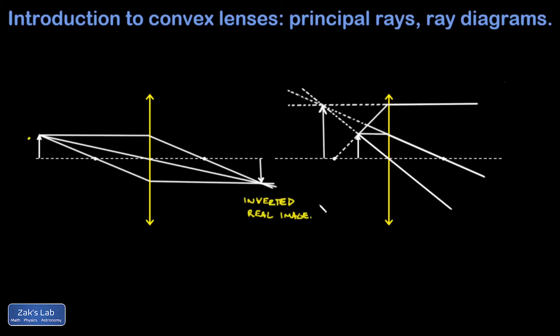So there are our two cases: when the object is outside the focus of the converging lens, we end up with an inverted real image on the opposite side. When the object is inside the focal point of the converging lens, we end up with an upright virtual image on the same side of the lens as the object.